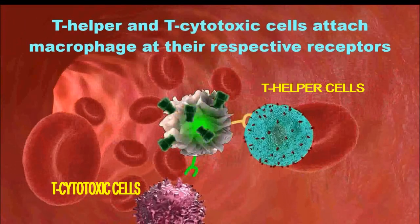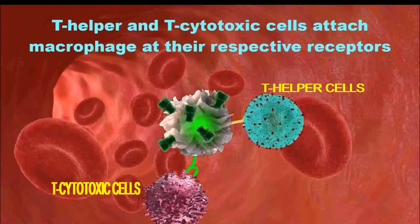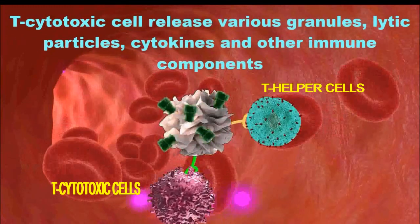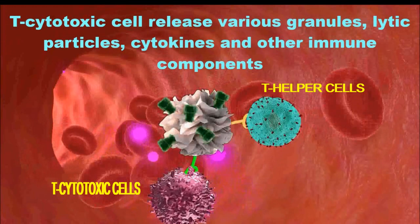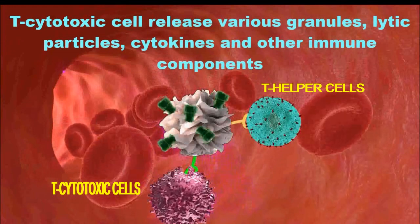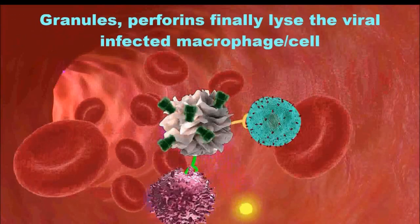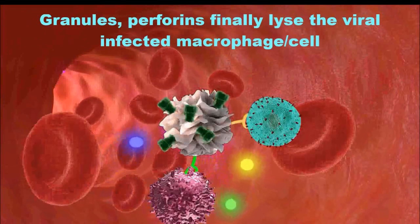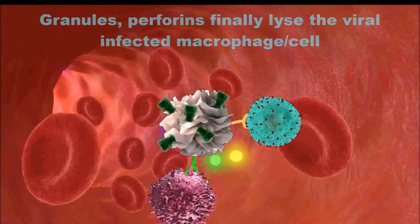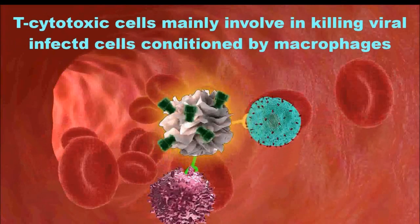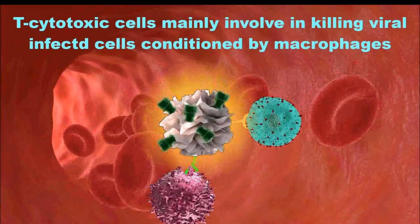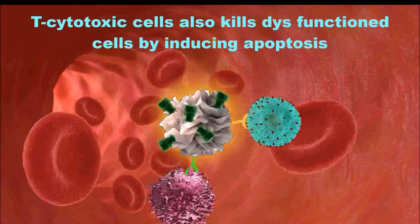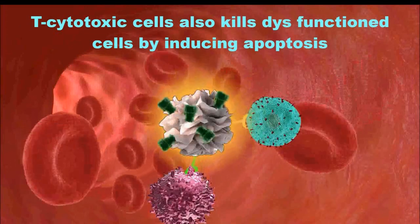T-helper and T-cytotoxic cells attach to macrophages at their respective receptors. T-cytotoxic cells release various granules, lytic particles, cytokines, and other immune components. Granules and perforins finally lyse the viral or infected cell. T-cytotoxic cells mainly involve in killing viral-infected cells conditioned by macrophages, and also kill dysfunctional cells such as cancer cells by inducing apoptosis.